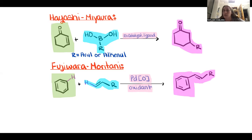Lastly, our products are also very different. So we get a beta-substituted carbonyl in the Hayashi-Miyaura reaction, where in the Fujiwara-Moritani reaction, we get this aromatic alkene complex.